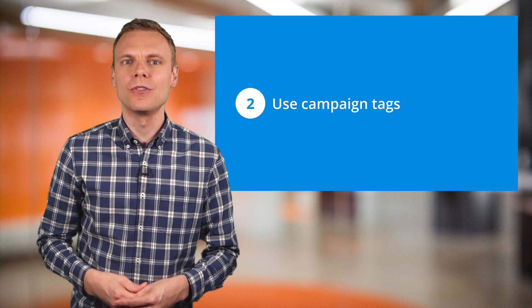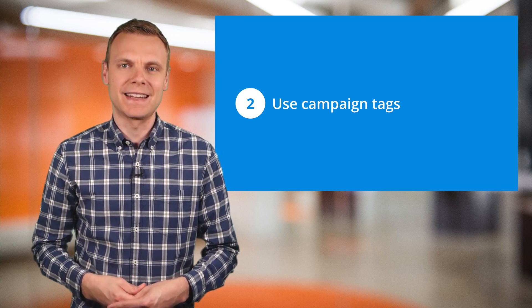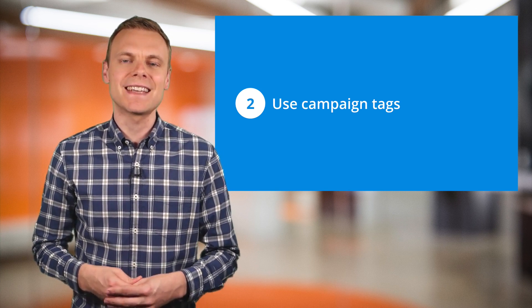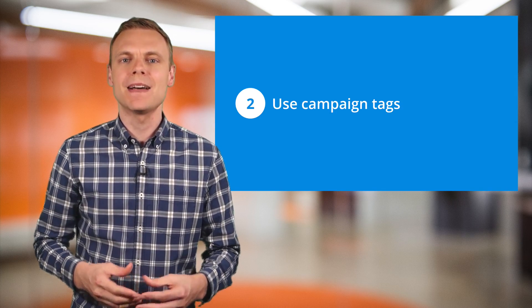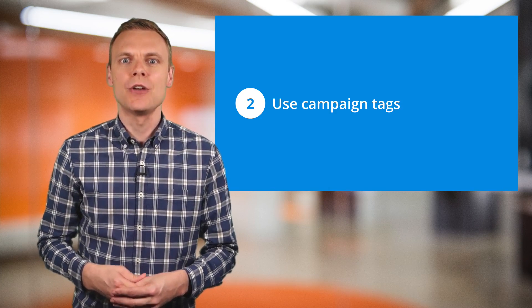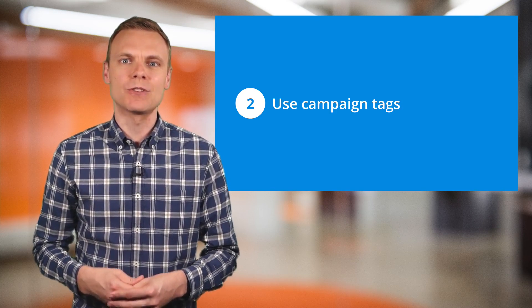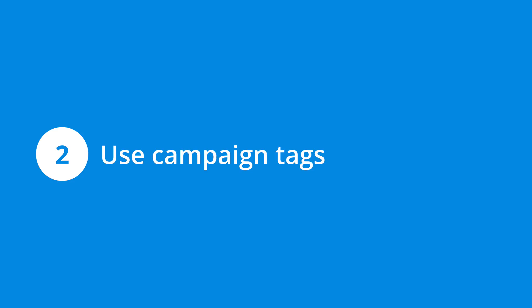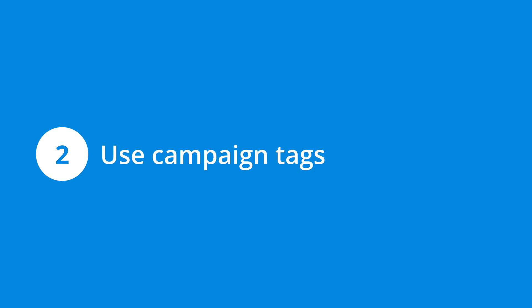Step number two is to tag all of your inbound marketing campaigns. Even if you can't tag all of your inbound marketing, by starting to use campaign tags you'll begin to see what's working and not working. Campaign tags can be used to track everything from your email campaigns through to offline campaigns that direct people to your website. Google provides a great tool to get started called the URL Builder, and I've included a link in the description below this video.